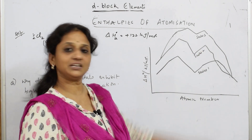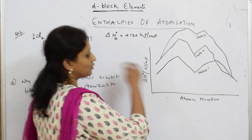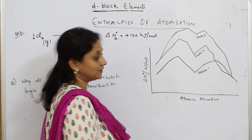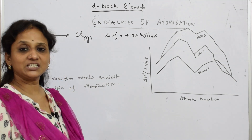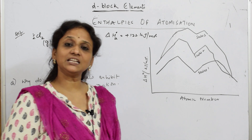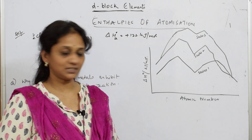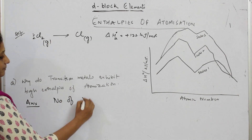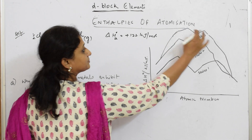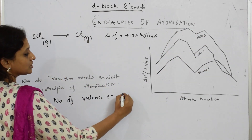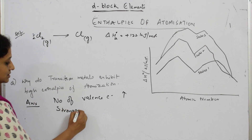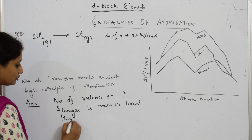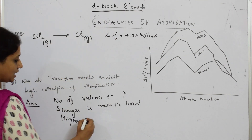For transition elements — the 3d, 4d, and 5d series — there is a lot of variation. Looking at the graph, scandium has the lowest values, zinc has a low value due to its completely filled configuration, and peaks appear at chromium and iron. These peaks occur because those elements have more unpaired valence electrons, making the metallic bond stronger and requiring higher enthalpy of atomization.